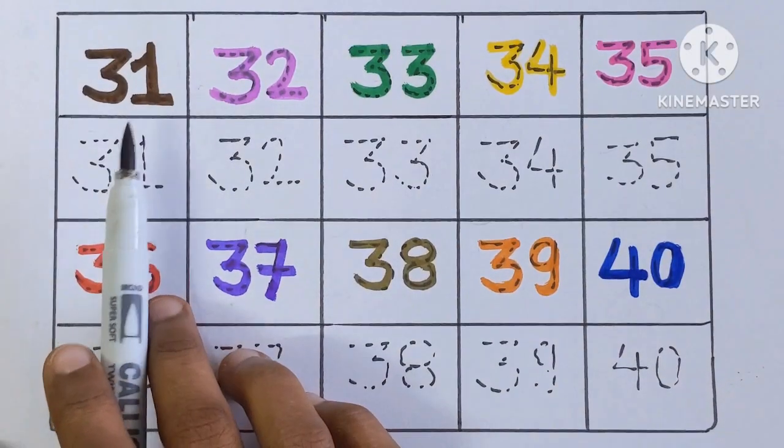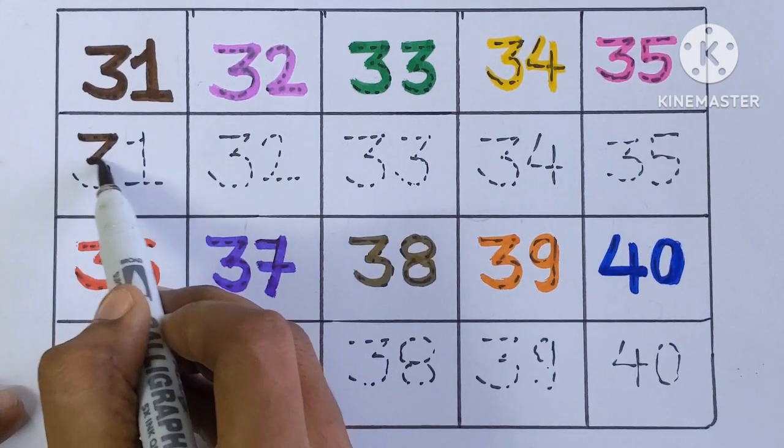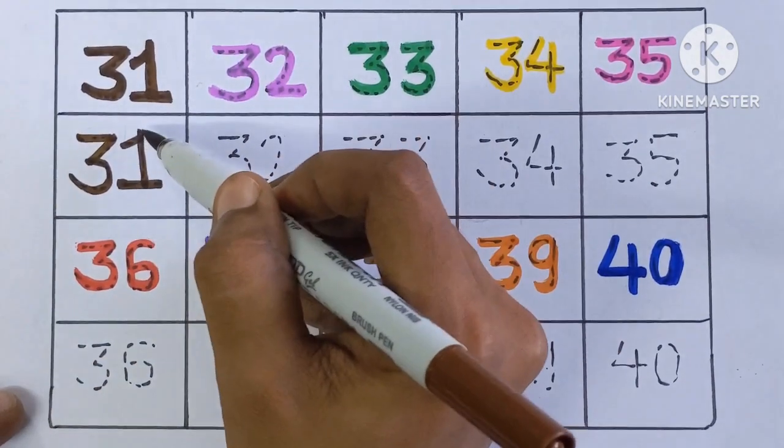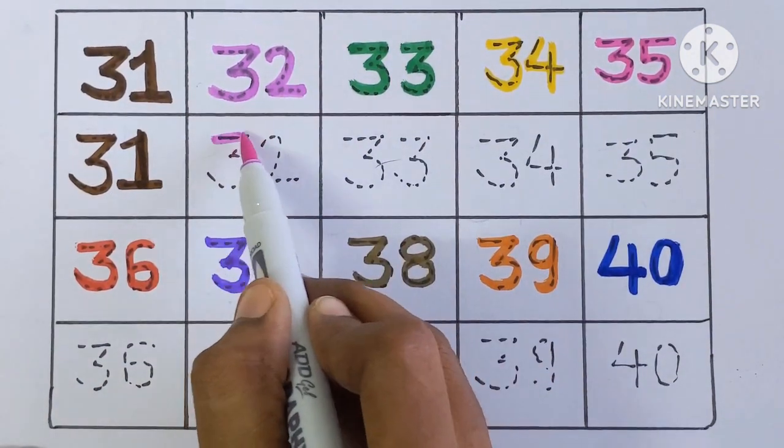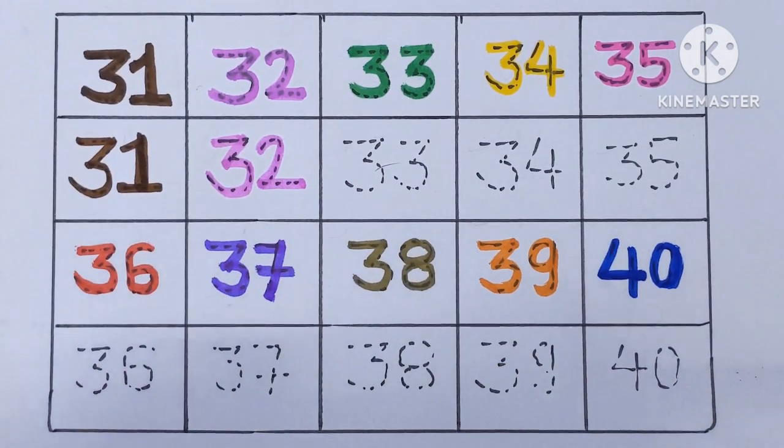At first, 31, 31, brown color. 32, 32, purple color.